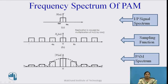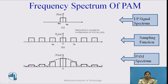For the answer, let us see the frequency spectrum of PAM. In PAM, the first input is a continuous time signal whose frequency spectrum has a maximum frequency FM. Then the sampling function, sampled at sampling frequency FS, has its own frequency spectrum. The PAM spectrum is a combination of these two spectrums together with the rectangular pulse spectrum — that is the frequency spectrum of PAM.